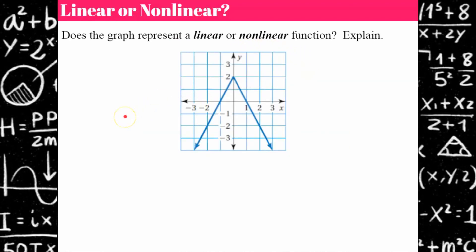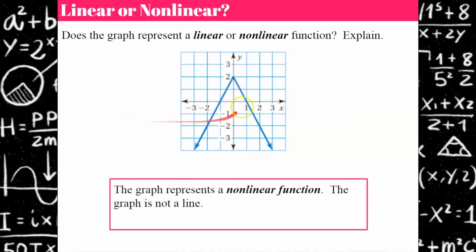Your turn — pause and come back when you're ready. Welcome back. This graph represents a non-linear function — the graph is not a line. Don't be fooled; there is a change in direction. Even though we have two rays here, this is actually an absolute value function that you'll learn about in Algebra 1, making it non-linear. If it's going to be linear, it has to continue in a straight line — it cannot have bends or curves.